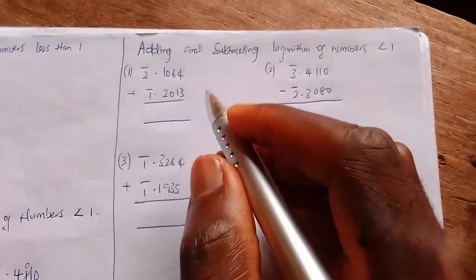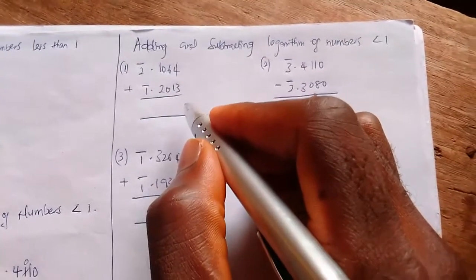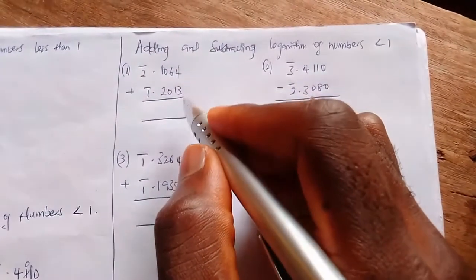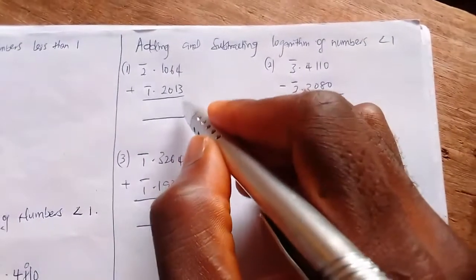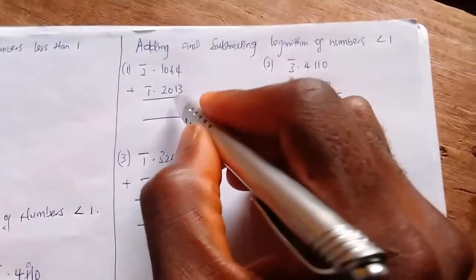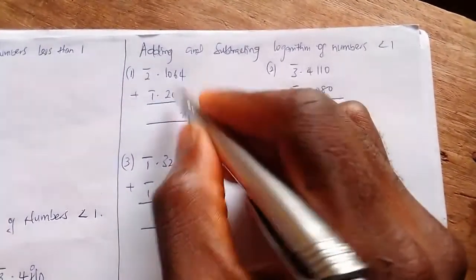Now just like in our normal addition and subtraction, let's say we're going to add numbers less than one in logarithm. Four plus three eight gives us seven, six plus one gives us seven, zero plus zero gives us zero, one plus two gives us three, bar two plus bar one gives us bar three.